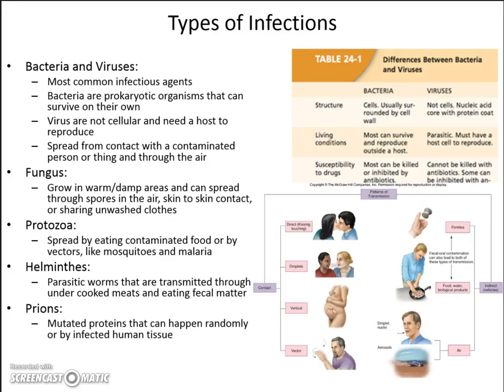Prions are probably the hardest and most rare to catch. A prion is whenever you have some sort of protein that becomes mutated. This can happen randomly in people with a genetic disorder or disease carried in families — a lot of times people don't even know they have it until it happens. In rare cases, you can actually eat brain or spinal tissue that's not cooked and ingest prions. Think of zombie movies where eating brains turns people into zombies — that's basically how prions work.